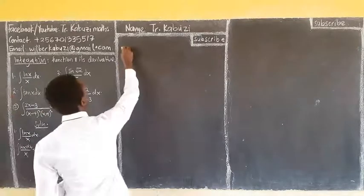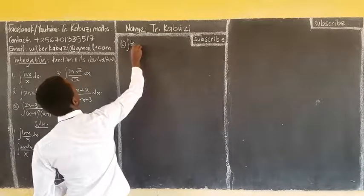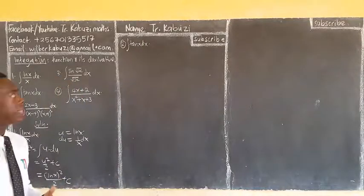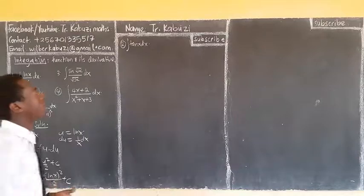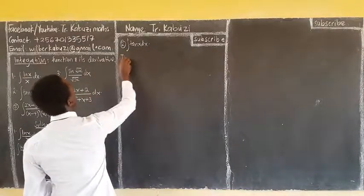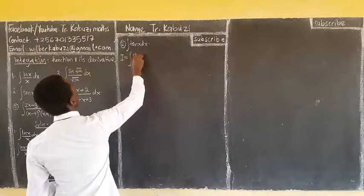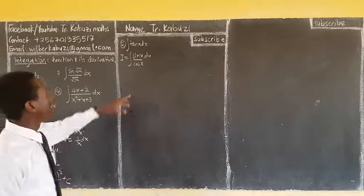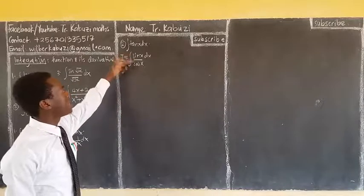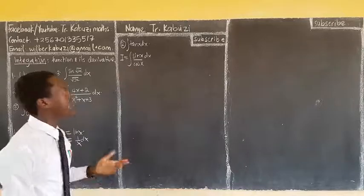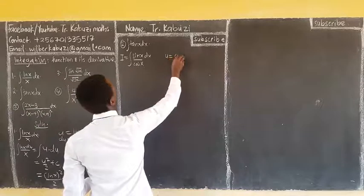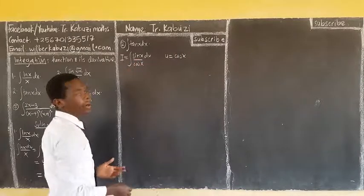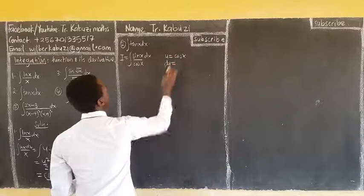Now we come to number 2: the integral of tan(x) dx. We express tan(x) as sin(x) over cos(x), so we write the integral of sin(x) over cos(x) dx. I notice that when I differentiate cos(x) I get negative sin(x), so I let u equal cos(x). Because of the negative, differentiating cos(x) gives negative sin(x).